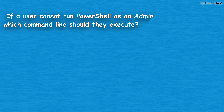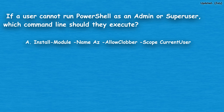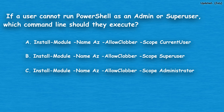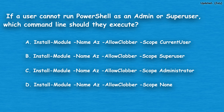The next question: if a user cannot run PowerShell as an admin or superuser, which command line should they execute? Option A: Install-Module -Name Az -AllowClobber -Scope CurrentUser. Option B: Install-Module -Name Az -AllowClobber -Scope SuperUser. Option C: Install-Module -Name Az -AllowClobber -Scope Administrator. Option D: Install-Module -Name Az -AllowClobber -Scope None.